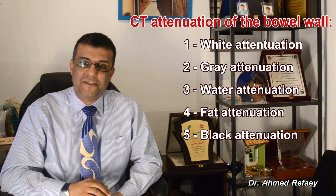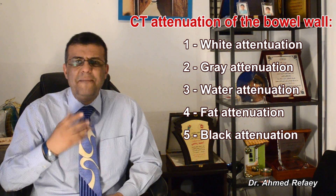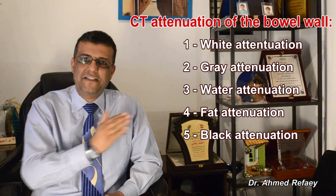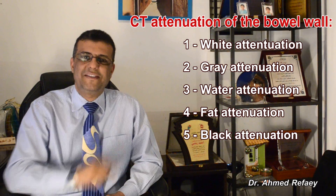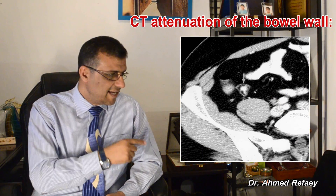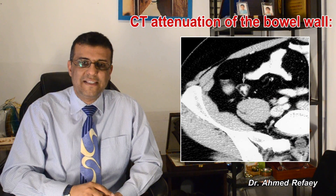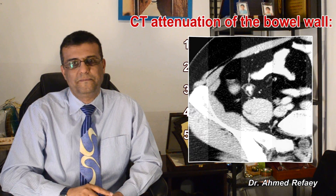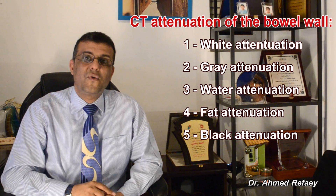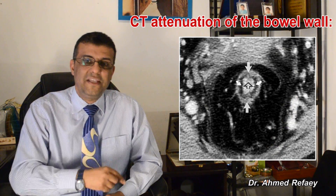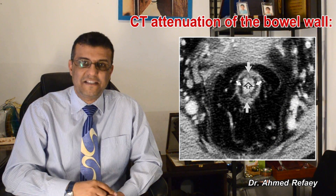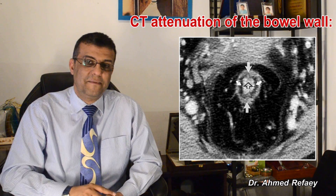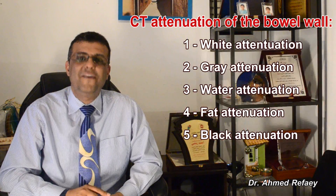The fourth category is fat attenuation, where there is fat replacement seen in the submucosa. Here we have a limited differential diagnosis: either chronic ulcerative colitis or chronic Crohn's disease. This is a case of chronic Crohn's disease showing fat replacement in the region of the terminal ileum. Another example is chronic ulcerative colitis, showing fat replacement in the submucosa involving the rectum.